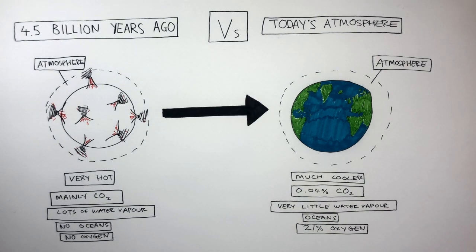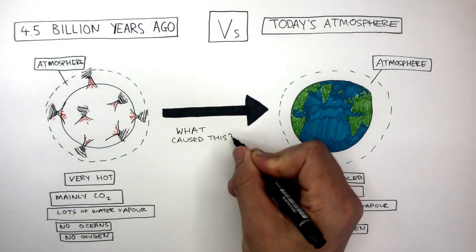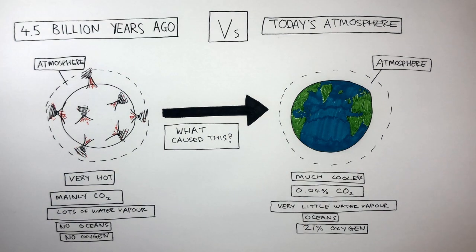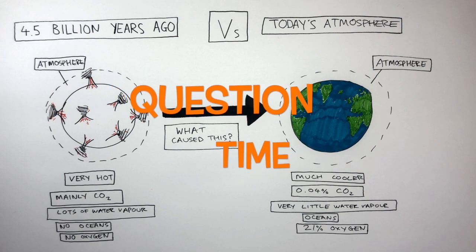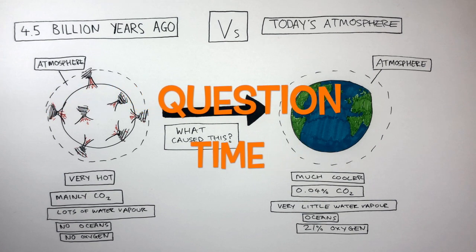So with so many changes, what caused this? Well, in this video we're going to summarise all of the natural processes which have caused carbon dioxide and oxygen levels to change over the last 4.5 billion years. It's question time. Attempt these questions to check your understanding.